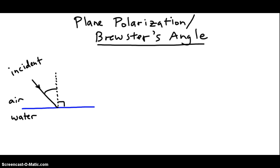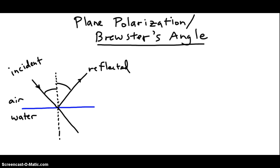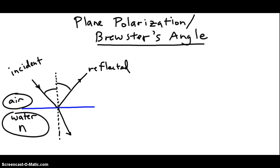The incoming ray we call the incident ray. What happens to this incident ray? Some is going to be reflected, and some will be transmitted into the water. The transmitted part doesn't just continue on in a straight line. What happens when you enter a different medium with a different refractive index — the light bends. Water has a higher value of refractive index than air, so the light bends toward the normal because n is higher in the water than in the air. There's our refracted beam.